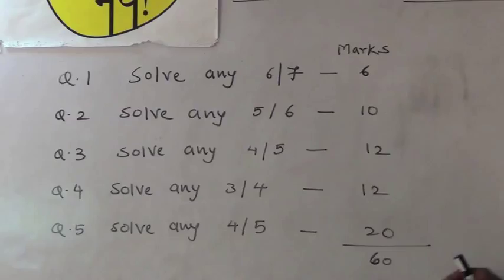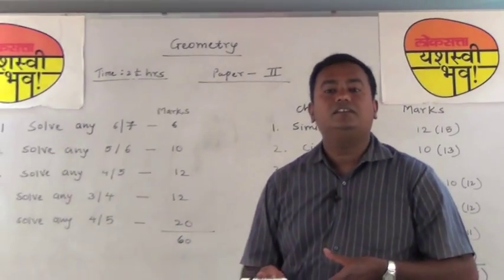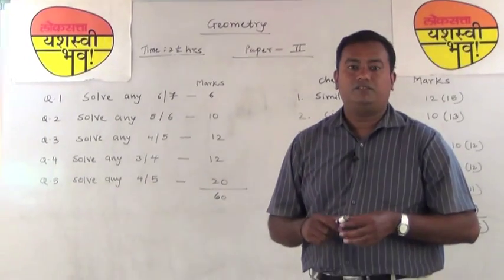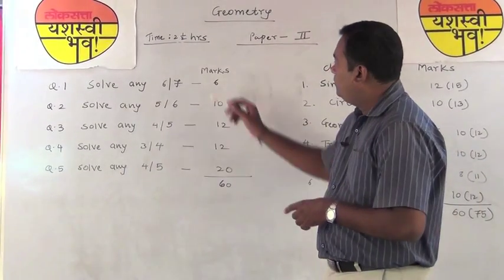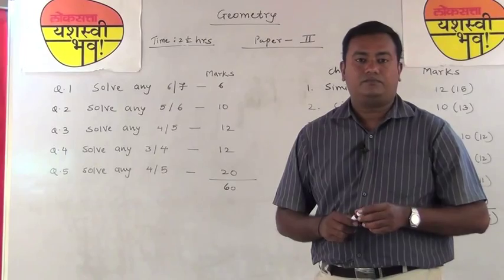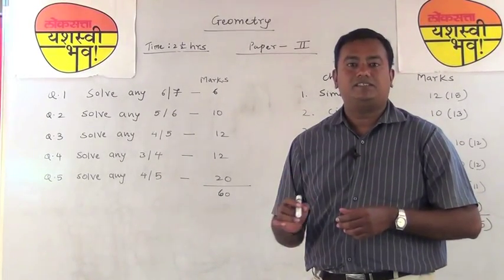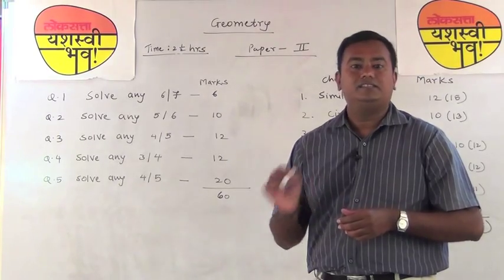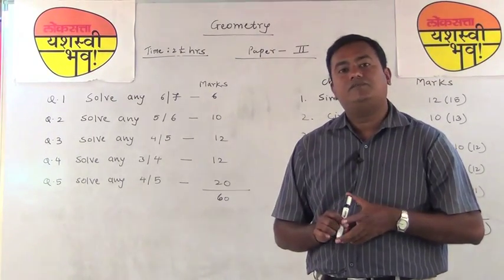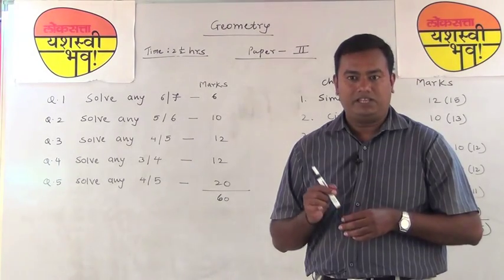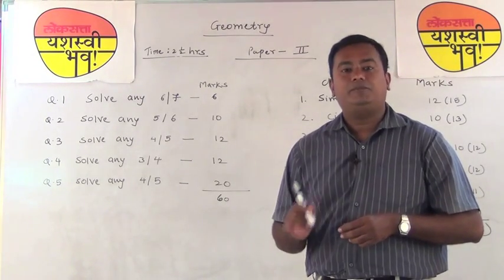As you can see from the paper pattern, question 1 is a 1-mark question, question 2 is a 2-mark question, question 3 is a 3-mark question, then 4 and 5 marks. For 1-mark questions, don't directly write the answer — show the necessary steps and write the reason. Do not just write the answer because we expect you to write it with steps and the appropriate reason.